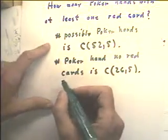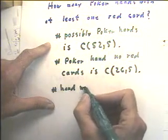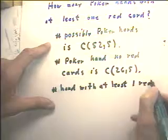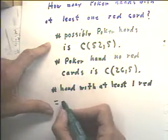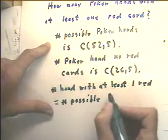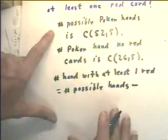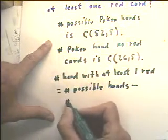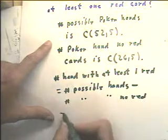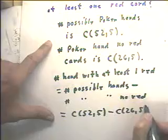So the number of poker hands with at least one red card is going to equal the number of possible hands minus the number of possible hands with no red cards. Which is going to be C(52,5) minus C(26,5).